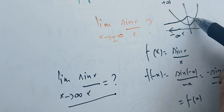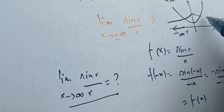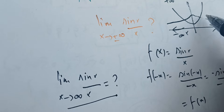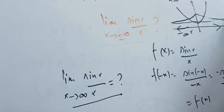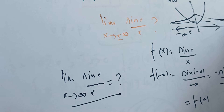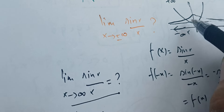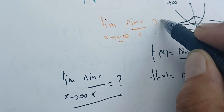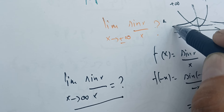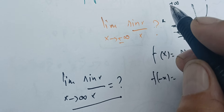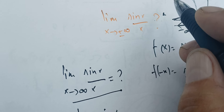Since we have an even function, if we find this limit equals some value as X goes to plus infinity, it will have the same value as X goes to minus infinity.